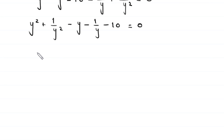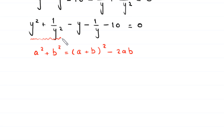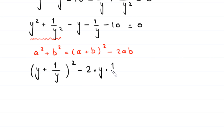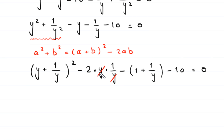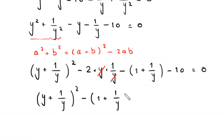Using the algebraic identity a² + b² = (a + b)² - 2ab, the term y² + 1/y² becomes (y + 1/y)² - 2. Factoring out a negative sign from the remaining terms gives -(y + 1/y). So the equation becomes (y + 1/y)² - (y + 1/y) - 2 - 10 = 0, which simplifies to (y + 1/y)² - (y + 1/y) - 12 = 0.